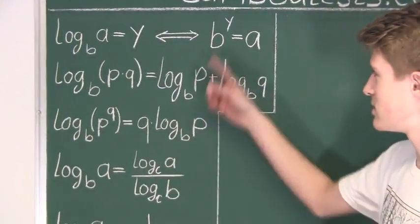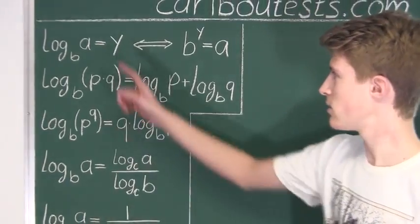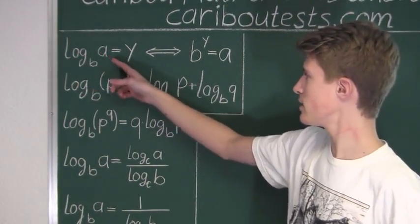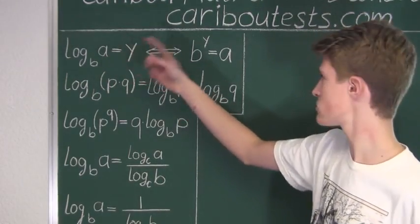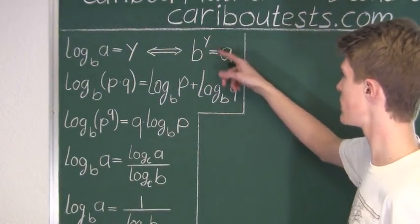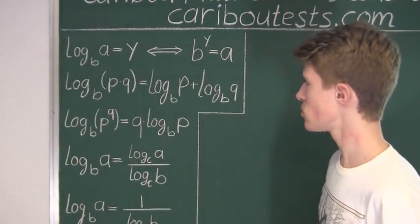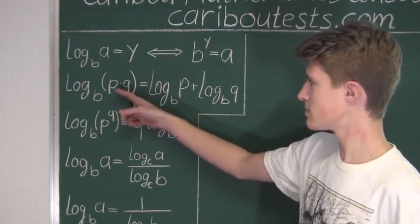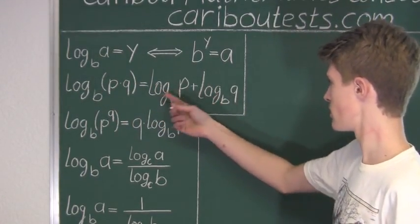This is just a reminder on how to use formulas for logarithms. Logarithm A base B equals y is just another way to rewrite B to the power of y is equal to A. The next rule shows how to rewrite the logarithm of a product — p times q — as a sum of logarithms.